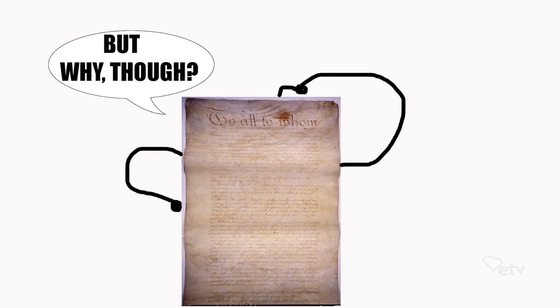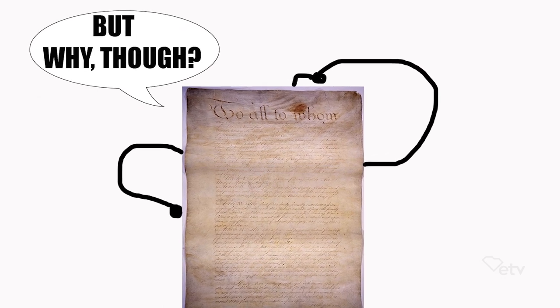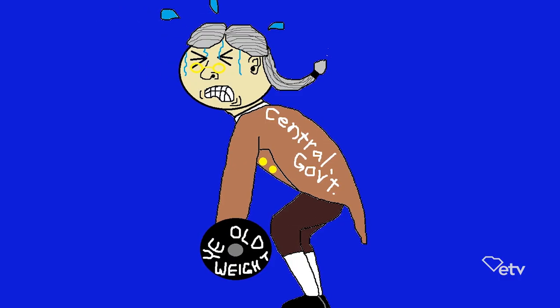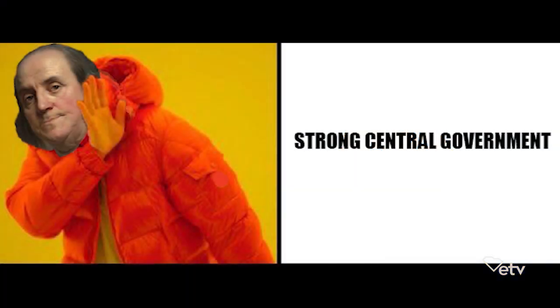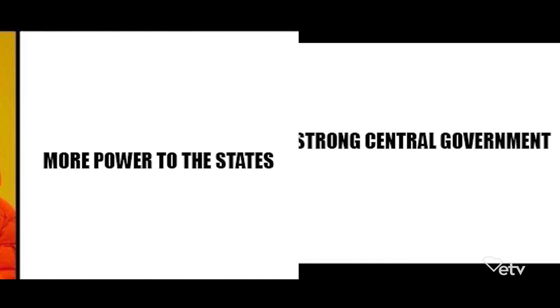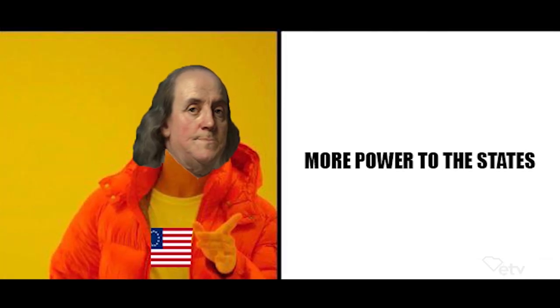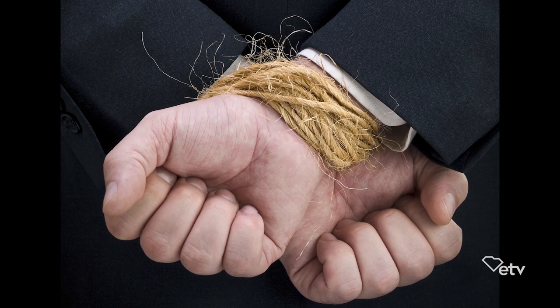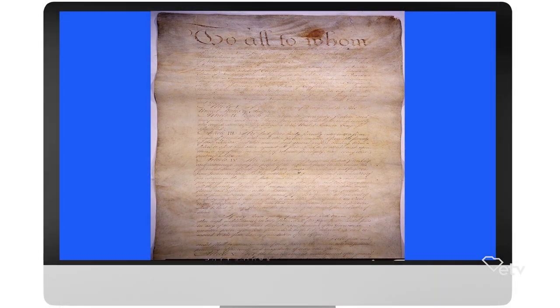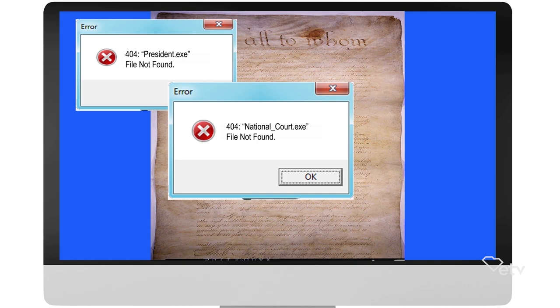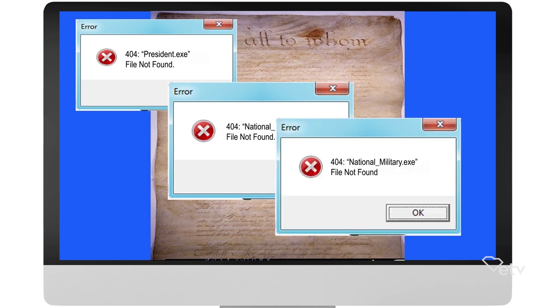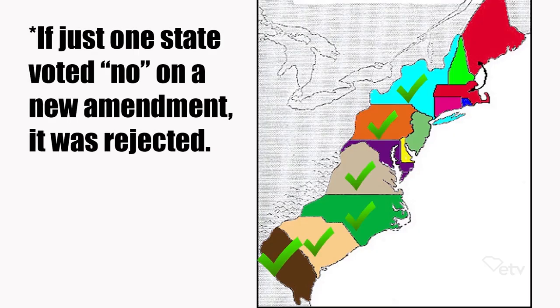But why did the Articles fail? Well, there are several reasons for this. One of its biggest flaws was a weak central government. The concept of a strong central government was not a popular one at the time, for Americans preferred loyalty to their home states. Because of this, the power of the central government was kept as weak as possible, in favor of more power to the individual states. Also, the government under the Articles lacked an executive branch to enforce acts, nor was there a centralized court system, no national military either, and a unanimous vote was needed to make any amendments.